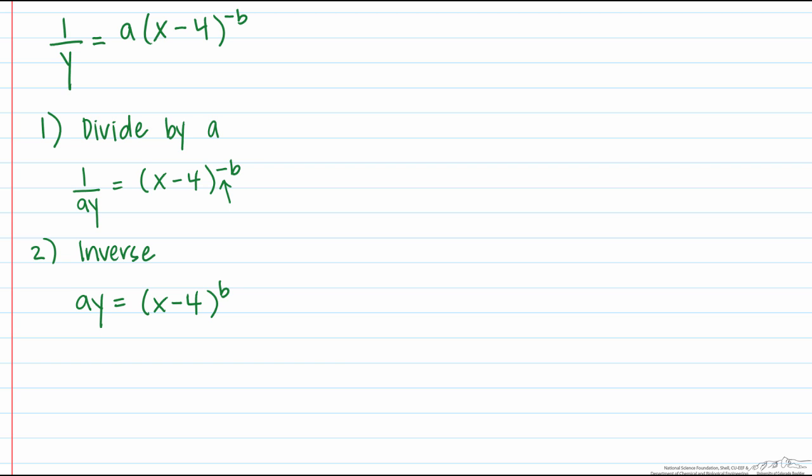Now whenever you see something raised to a parameter you should be thinking natural log. So let's take the natural log of both sides. This still isn't quite what we want because of this a times y so we use the law of natural log such that ln of a times y is the same thing as ln of a plus ln of y and this equals b ln of x minus 4.